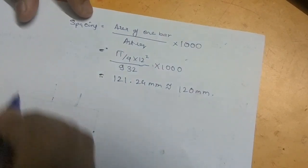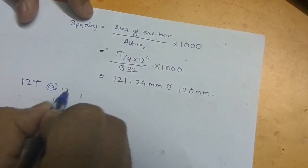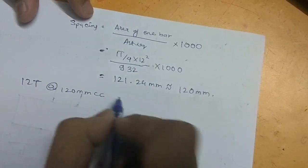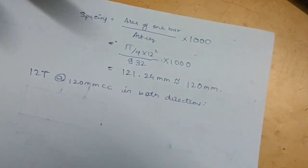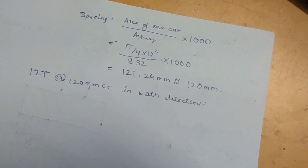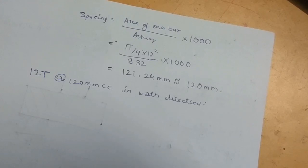We provide 12 mm tor steel bars at 120 mm centre-to-centre in both directions. So far we have calculated the bending moment, the effective and overall depth, and the tension steel for the footing. The next steps — checking one-way shear, two-way shear, development length, and load transfer — will be covered in the next video. Thanks for watching.